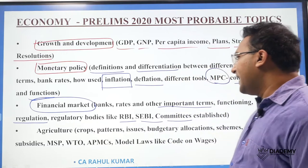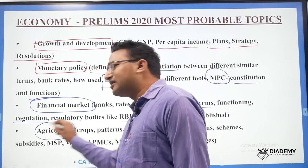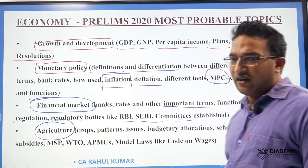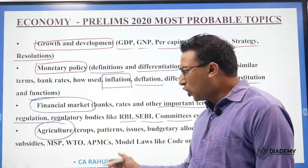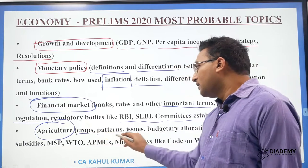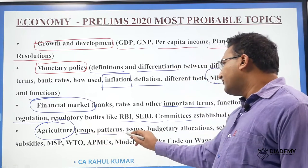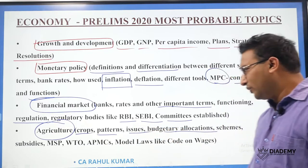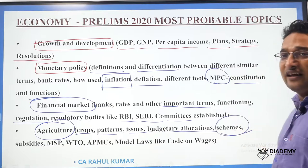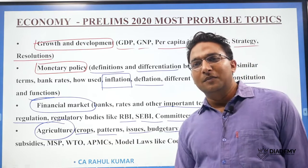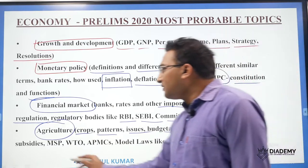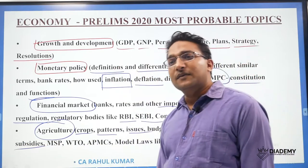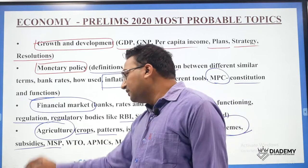In the agriculture sector, there have been a lot of developments this year. You should know about those developments and also cover traditional areas: cropping patterns, different issues, budgetary allocations, and various schemes — these schemes are very important. Also cover trends in subsidies from the Economic Survey — food subsidy, fertilizer subsidy, and MSP.